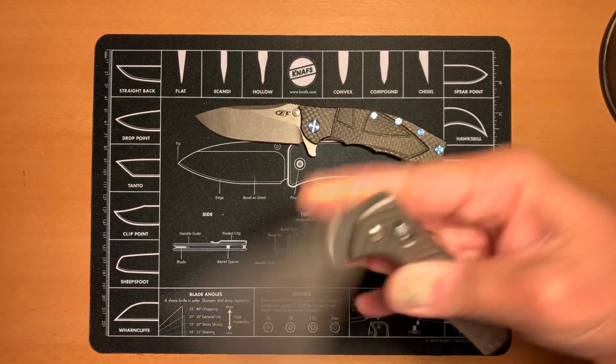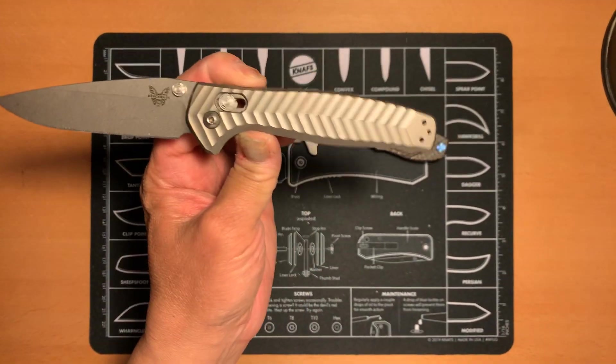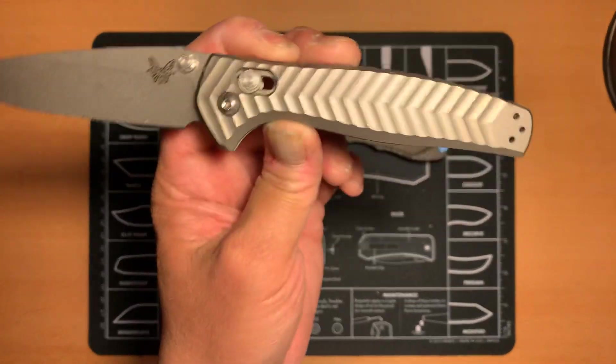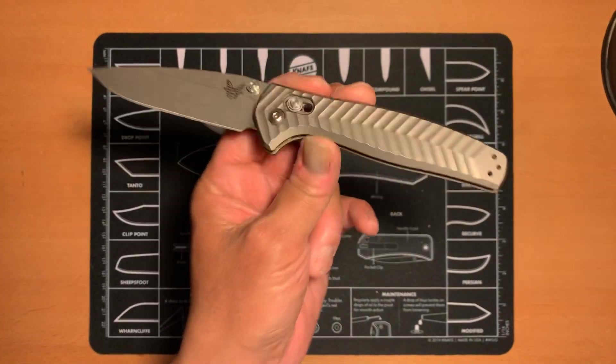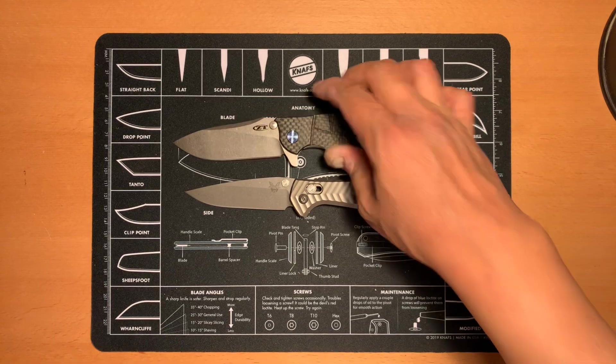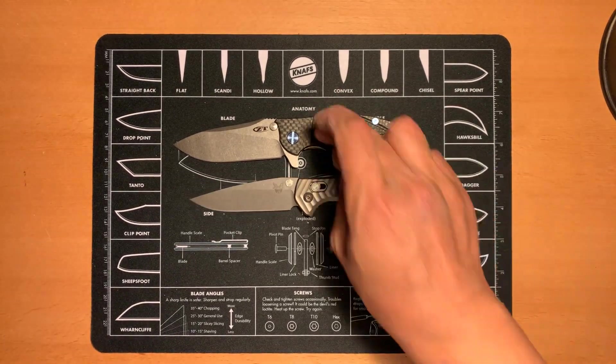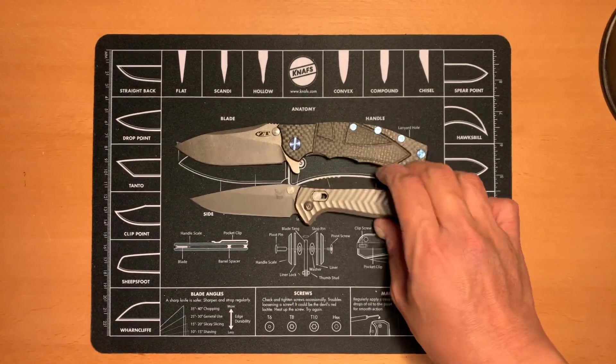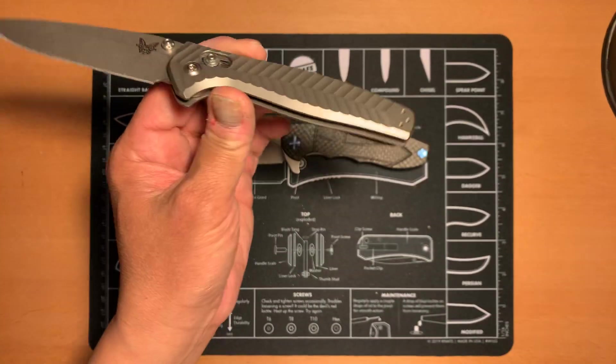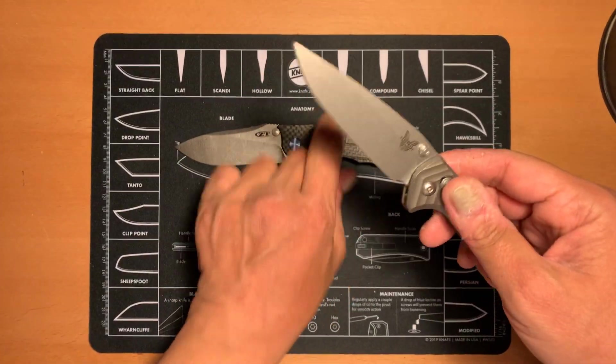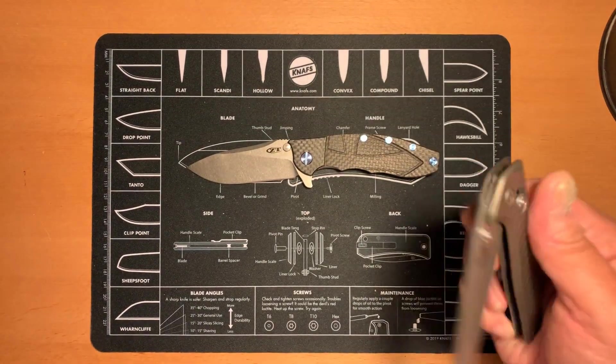I mean, I can't see using my Benchmade Anthem in that fashion. I probably could, but aesthetically, if I had to choose between two knives to do something really hard work, I'm going to choose the ZT over this one. And not because this knife cost me a lot more, but because this knife is, it really is built for that.